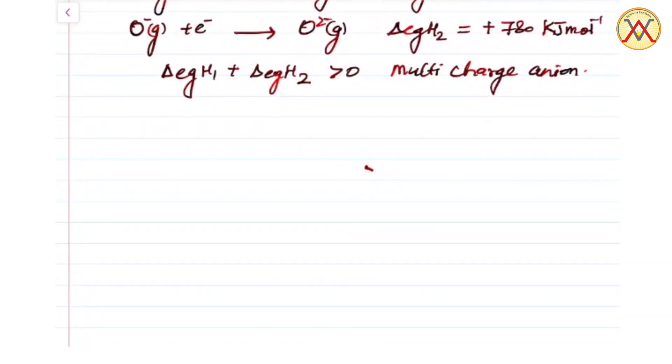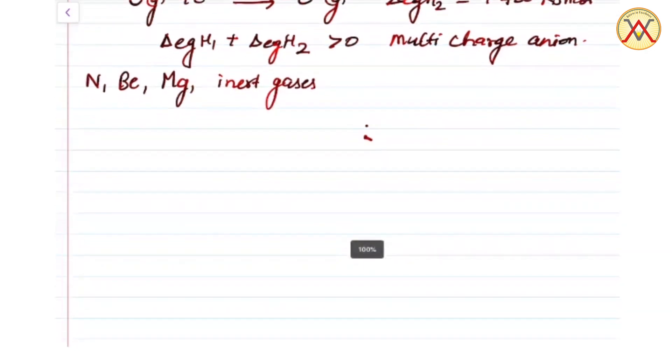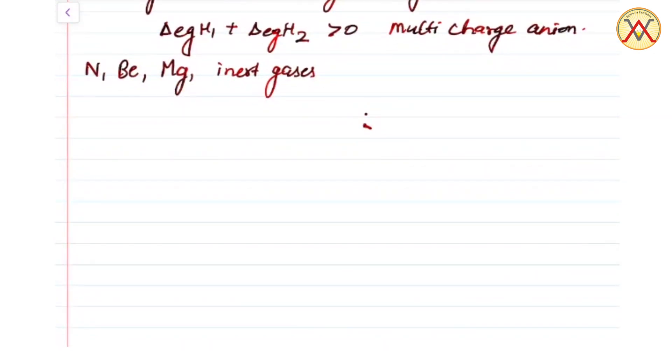If an element such as nitrogen, beryllium, magnesium, or inert gases has a stable electronic configuration, that is either half-filled or full-filled subshell, then that element has very little tendency to add electron in neutral atom.